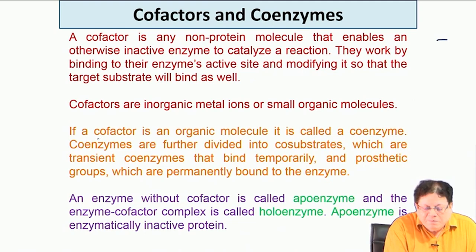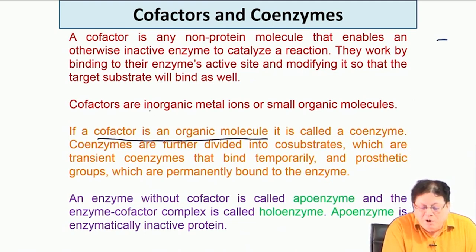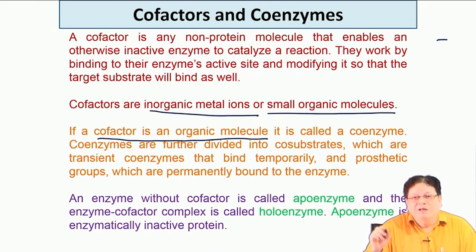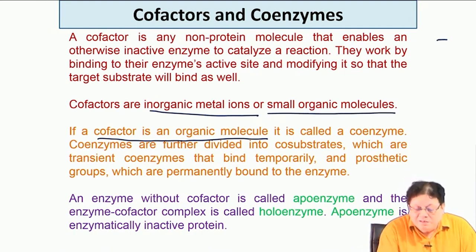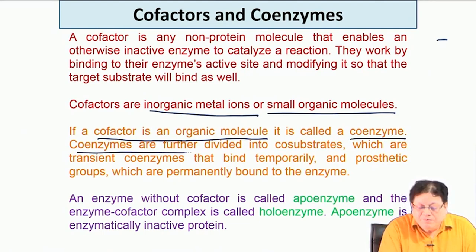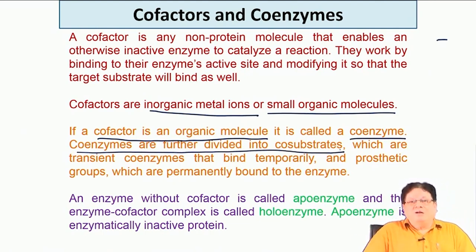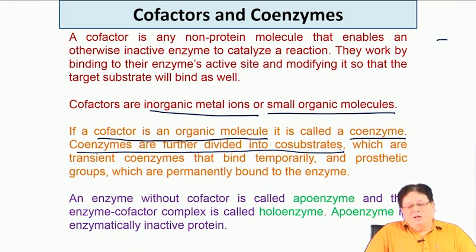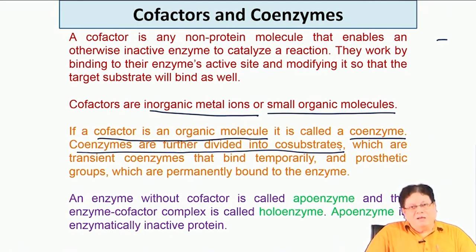Cofactors can be inorganic metal ions or small organic molecules. When the cofactor is a small organic molecule, it is called a coenzyme. Coenzymes can be divided into two categories: in one, the coenzyme is added from outside and binds temporarily to the enzyme active site, then is released so it can catalyze other molecules of the same enzyme, increasing the turnover number.